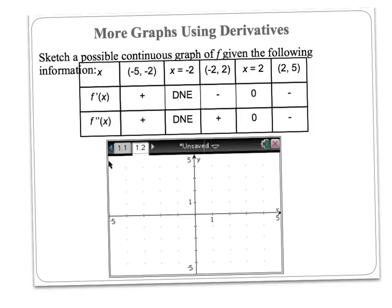This is a classic AP exam question where you're given conditions and asked to sketch the graph. From x = −5 to −2, f′ > 0 and f″ > 0, meaning the function is increasing and concave up. At x = −2, both derivatives are DNE. From x = −2 to 2, f′ < 0 but f″ > 0, so the function is decreasing and concave up. At x = 2, both derivatives equal 0. From x = 2 to 5, both f′ < 0 and f″ < 0, so the function is decreasing and concave down.